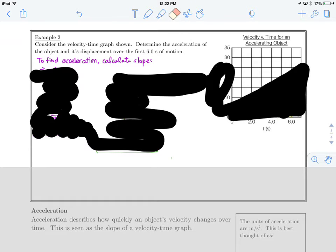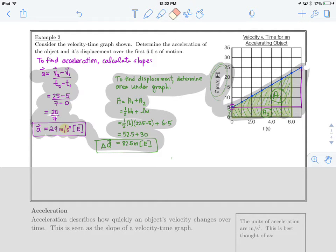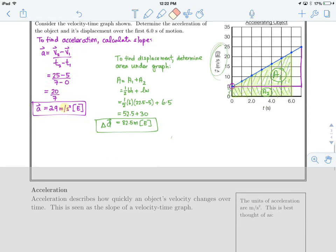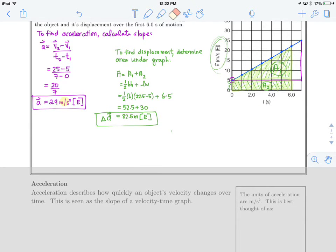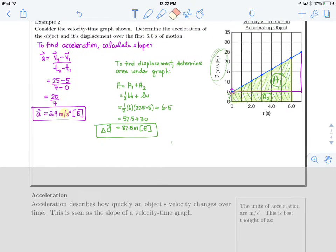So first of all, to calculate the acceleration, or to find the acceleration, you're going to calculate slope. And then so here we have what I got. Slope calculation should be in and around 2.9 meters per second squared in the east direction. Again, you may have written meters per second per second in terms of your unit here, and that is fine.